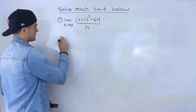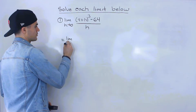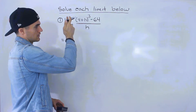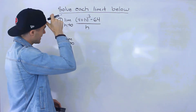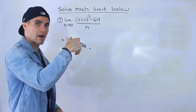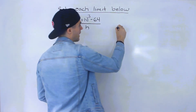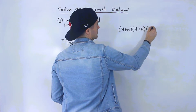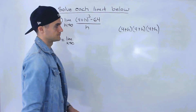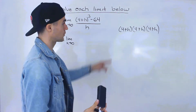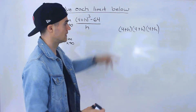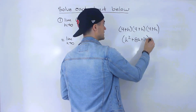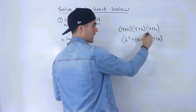The first method we covered in the previous video was just fully expanding that numerator. The problem is we have this power of 3 here — before we had power 2, so expanding wasn't too bad. Now that we have this power of 3, basically we've got (4 plus h) times (4 plus h) times (4 plus h). So foiling now is going to take more work. We've got to foil these two brackets here, which would end up giving us h squared plus 8h plus 16.